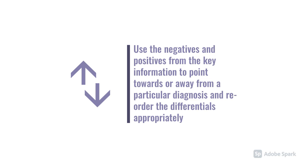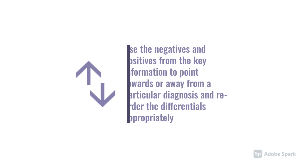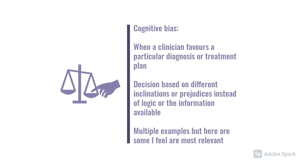I'd like to talk about bias and cognitive bias, because it's quite an interesting area of human factors and clinical reasoning generally. Cognitive bias is when a clinician favours a particular diagnosis or treatment through a decision-making process that relies on different prejudices, inclinations, and thought processes instead of logic or clinical information. Cognitive bias is an overarching term with many subtypes — Professor Google found over 50 different subtypes. There are far too many to go through, but I've picked out a few key ones.